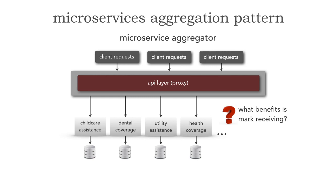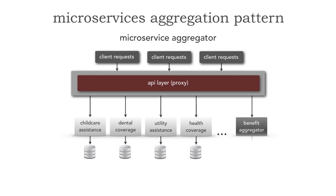So how do you do these? That's something called an aggregator. Like an orchestrator, what we would do is add another microservice — a separately deployed microservice. Notice that it has its own data, called a benefit aggregator.